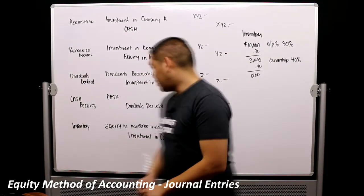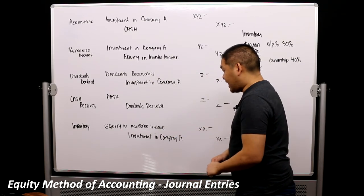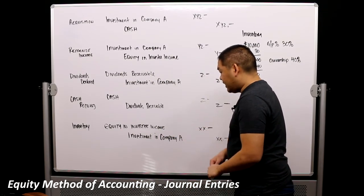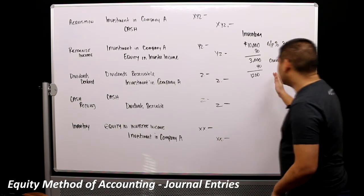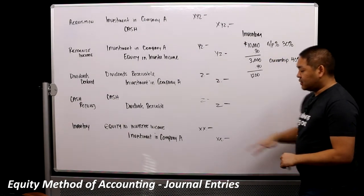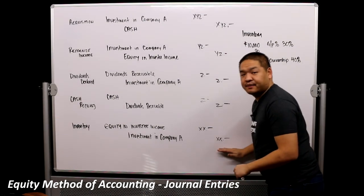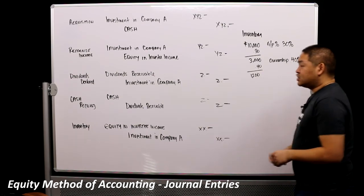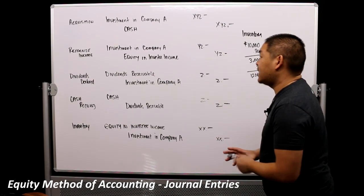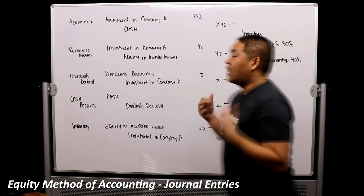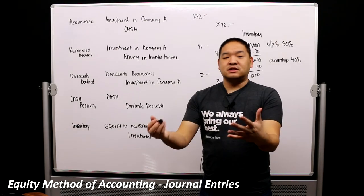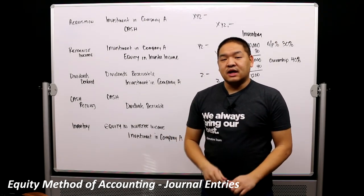So when it comes to that inventory, we would debit that equity and investee income credit investment in company A. In this case, we're deferring $1,200, so we would put $1,200 and $1,200 there. So those are the journal entries when it comes to the equity method of accounting and when it comes to our investment into an investee, and in our case, we've been using company A.